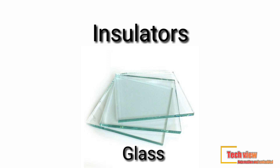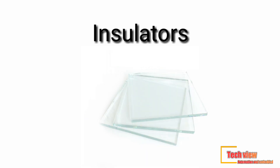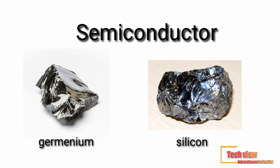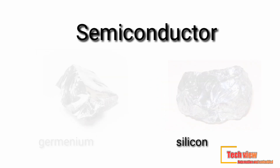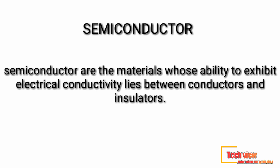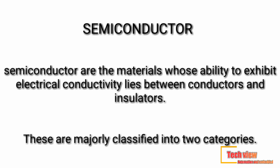There is another group of materials such as germanium and silicon. These are neither good conductors nor good insulators at room temperature. These materials have conductivities considerably lower than that of conductors but much higher than that of insulators. Semiconductors are materials whose ability to exhibit electrical conductivity lies between conductors and insulators.